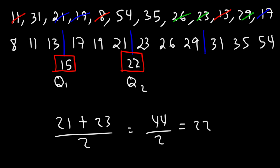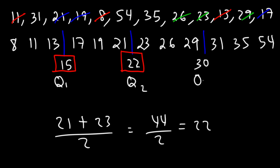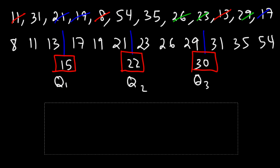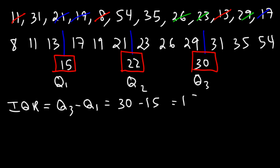Now to find Q3, we split the upper half of the data into two equal parts — two parts of three. The average of 29 and 31 is 30, so 30 is the third quartile. Now once you have Q1 and Q3, you can calculate the interquartile range: 30 minus 15, which is 15. And so this is our IQR value.